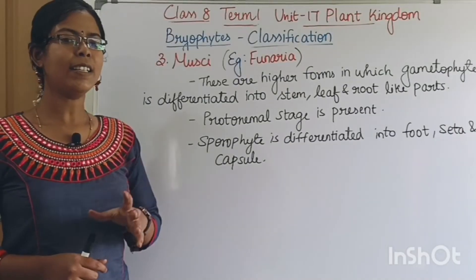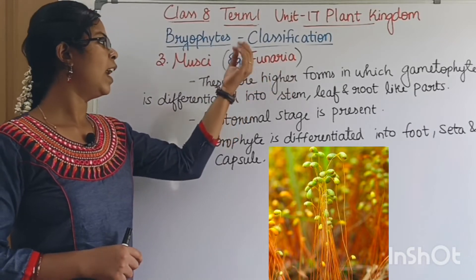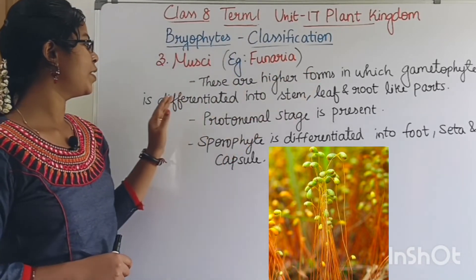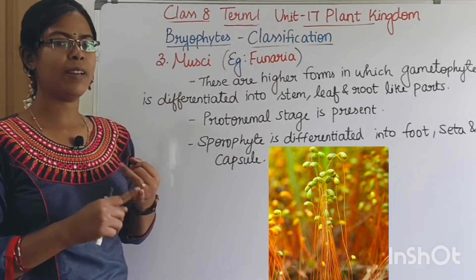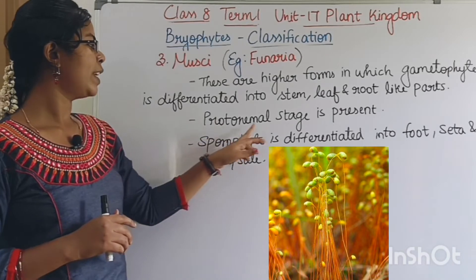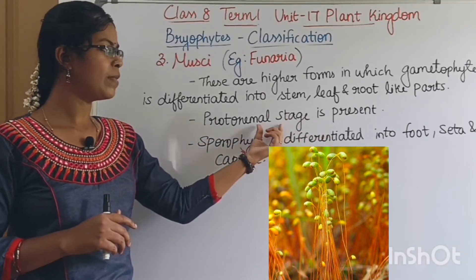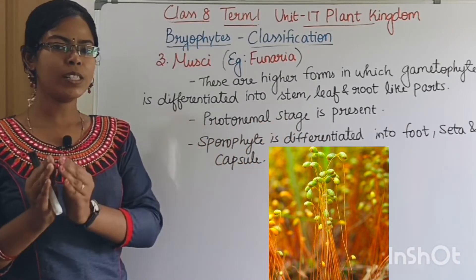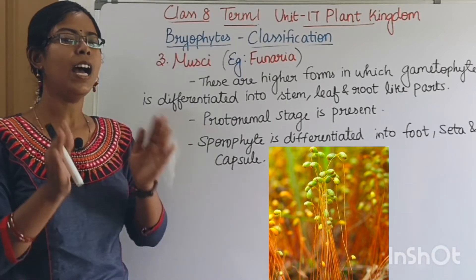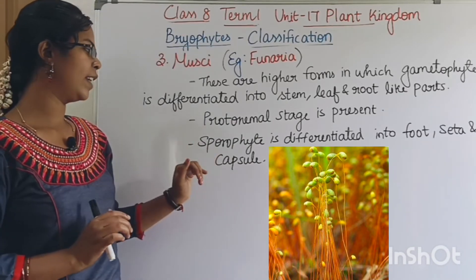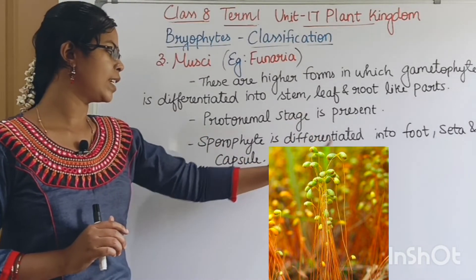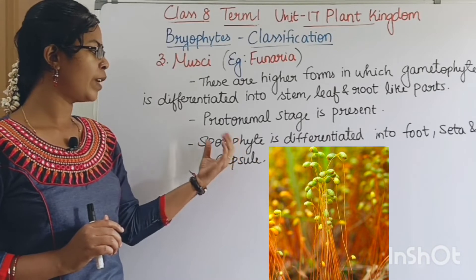The third class is Musci. The example is Funaria. This is a higher form of plant in which the gametophyte is differentiated into stem-like, root-like, and leaf-like structures. The protonema stage is present, in which spores develop. The sporophyte is differentiated into three parts: foot, seta, and capsule.